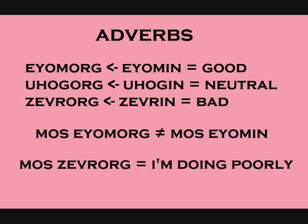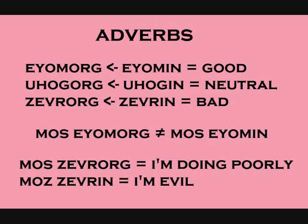Similarly, 'mos zevrorg' refers to your state of being, while 'mos zevrin' would mean that you are an evil person. So if you are not feeling well and having a bad day, you'd say 'mos zevrorg'. However, if you are an immoral individual who is plotting various crimes, you'd say 'mos zevrin'.